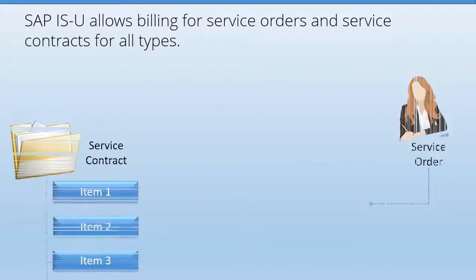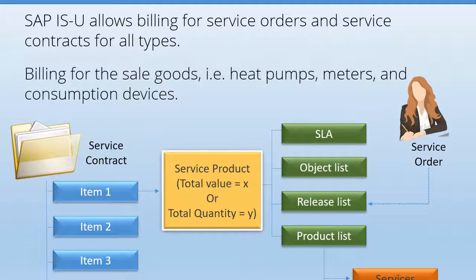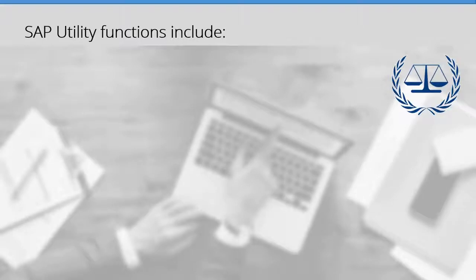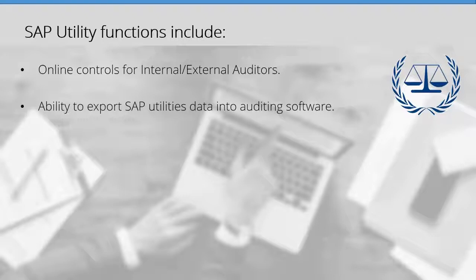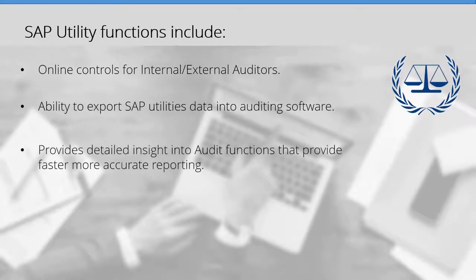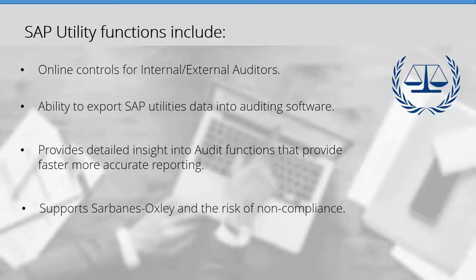Another benefit of SAP Utilities is that it allows for billing service orders and service contracts for all types, including billing for the sale of goods such as heat pumps, meters, and consumption devices. Implementing SAP for Utilities and CCS can greatly improve corporate governance and helps customers manage regulatory compliance by centralizing documentation of internal controls. These functions include online controls for internal and external auditors, as well as the ability to export data into auditing software, enabling faster, more accurate reporting and supporting whistleblowers in addressing the legal requirements of the Sarbanes-Oxley Act to reduce the risk of noncompliance.